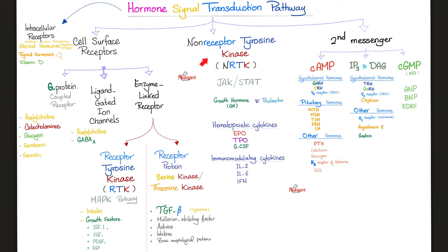Who utilizes this pathway? Growth hormone, prolactin, and hematopoietic cytokines such as EPO and TPO, granulocyte colony-stimulating factor, immunomodulating cytokines such as interleukin-2, interleukin-6, and interferon. Pay attention: growth factors are on a different pathway, but growth hormone is here. Big difference.